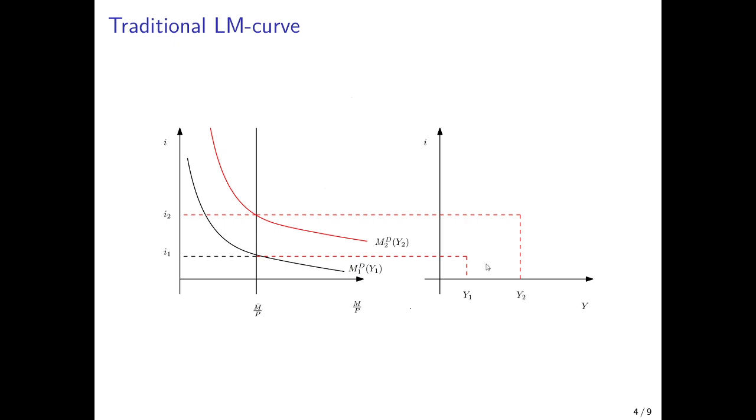And we have that the low equilibrium is associated with the low interest rate and low income and the high equilibrium, if you will, with a higher income level and the higher interest rate. And then we just connect the points to get the traditional LM curve, which is upward sloping.